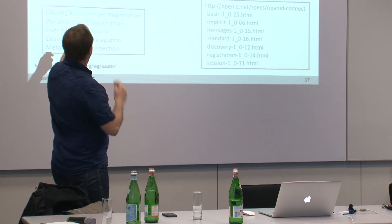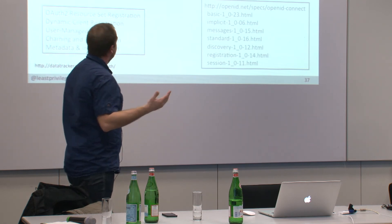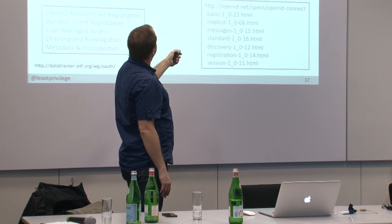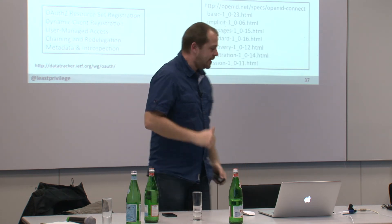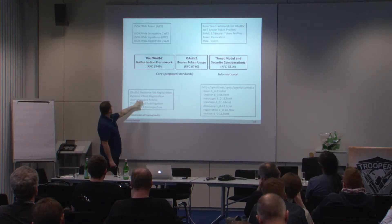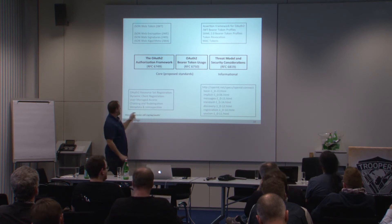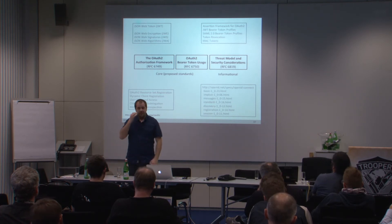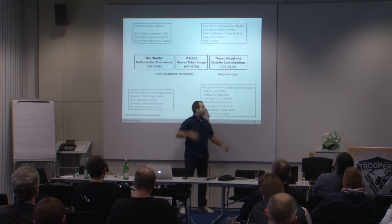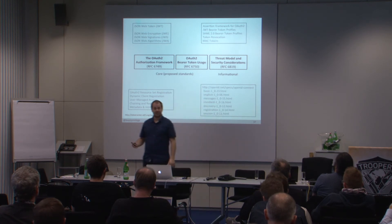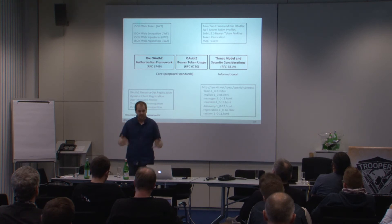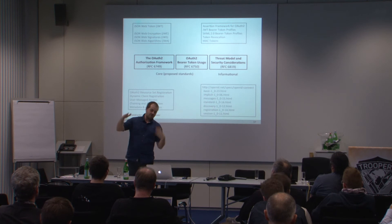Satellite specs still in progress include SAML2, token revocation, MAC tokens, client registration, consent flows, chaining of authorization servers, and metadata. OAuth is not about authentication — it's about authorization. If you want authentication, there's OpenID Connect sitting on top of OAuth, adding another six to eight specs to read. We need something like a basic profile that talks about simple use cases with strict MUST requirements.